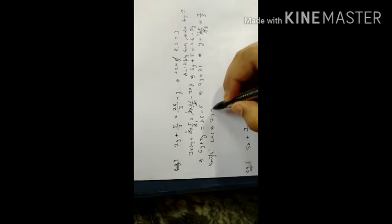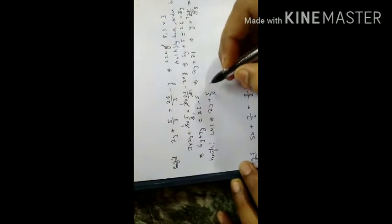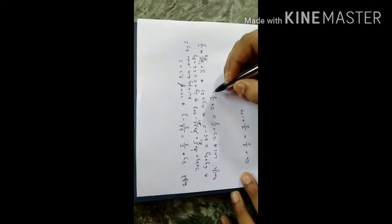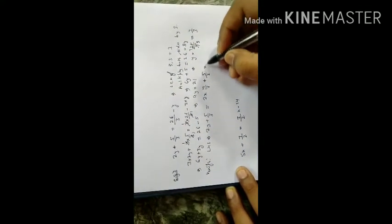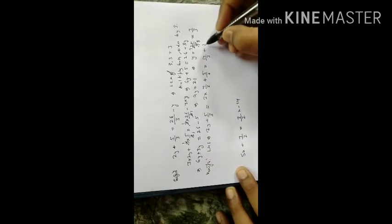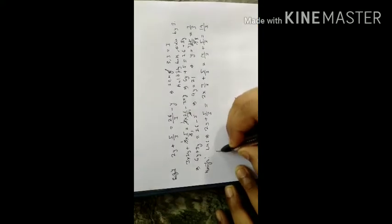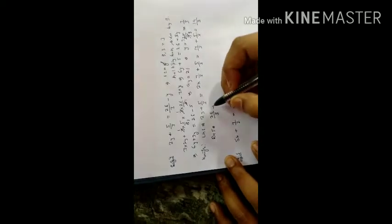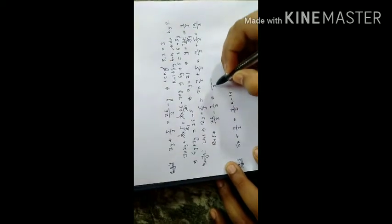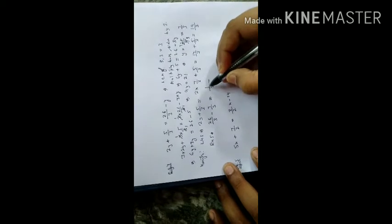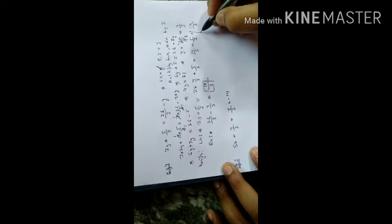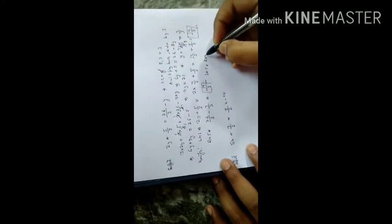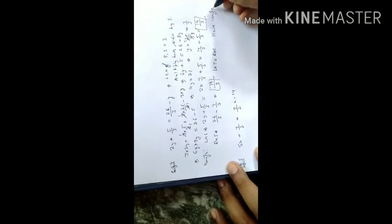Verification: Left hand side is 2y plus 5 upon 3. Substituting y equals 7 upon 3: 2 times 7 upon 3 plus 5 upon 3 equals 14 upon 3 plus 5 upon 3 equals 19 upon 3. Right hand side: 26 upon 3 minus 7 upon 3 equals 19 upon 3. Left hand side equals right hand side. Hence verified.